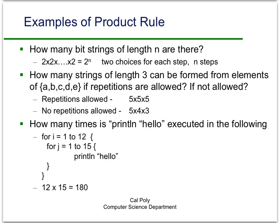So some examples of the product rule — and again, you've seen some of these. How many bit strings, strings of just zeros and ones, of length n are there? Well, you have two choices for the first entry in the bit string, two choices for the second entry, two choices for the last entry. So since there are n entries, there are two to the n choices.